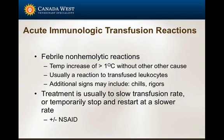Some of the other signs you may see in conjunction with the elevated temperature are chills and fevers. In general, we start by lowering the transfusion rate, as long as the temperature hasn't spiked too quickly. Sometimes, depending on what the temperature is doing and how the clinician wants to manage the patient, we stop it and potentially restart at a slower rate. Some will administer non-steroidal anti-inflammatories or steroids.